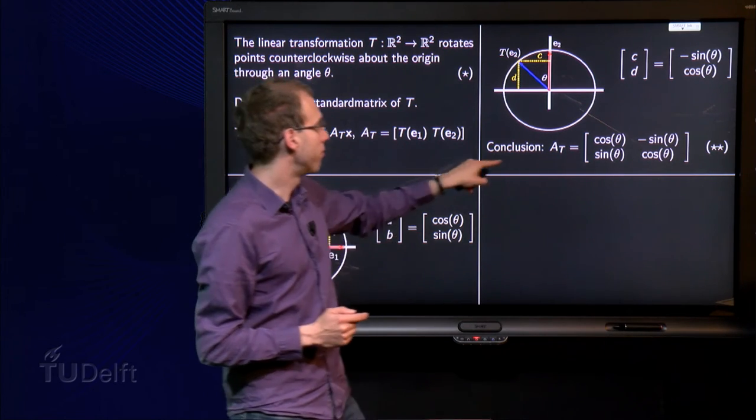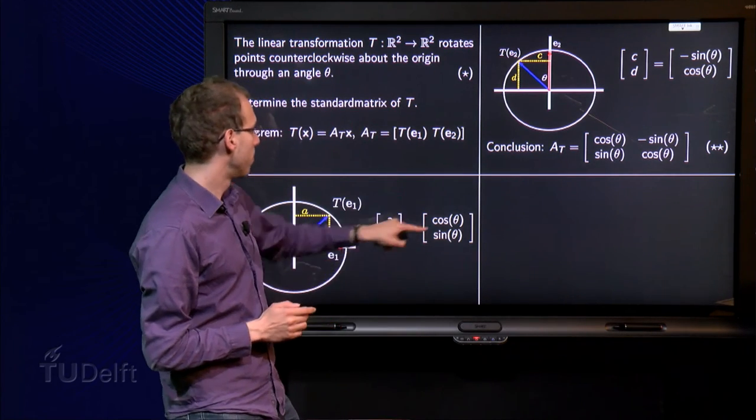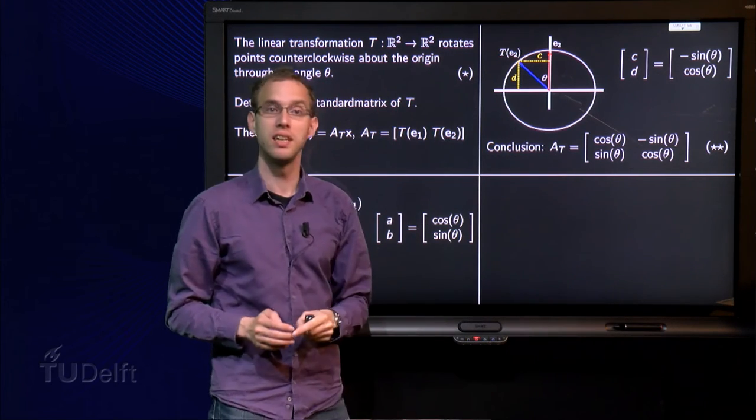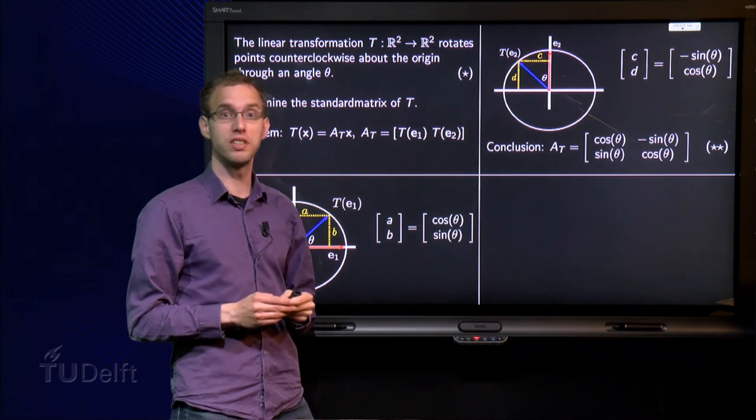And then we can form A_T by just plugging these two vectors in the matrix. And there we have the standard matrix of this transformation.